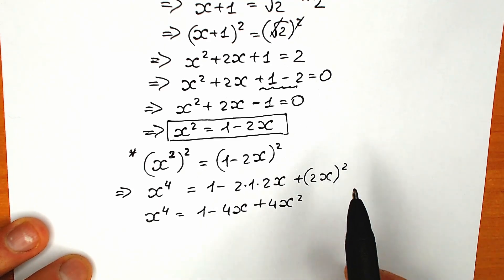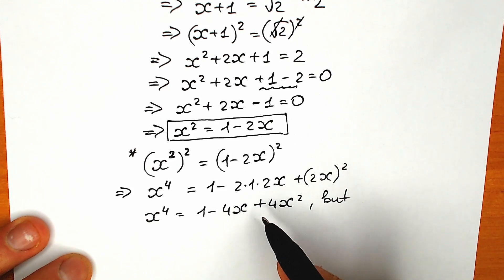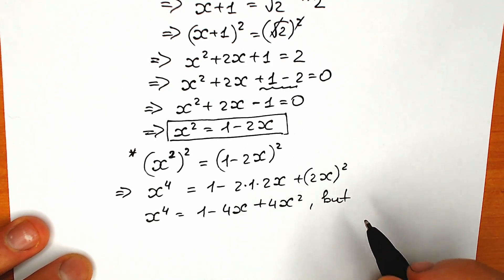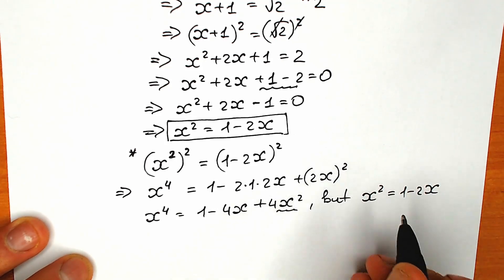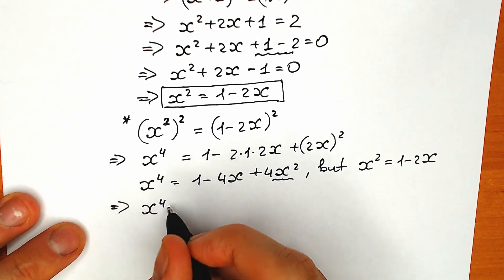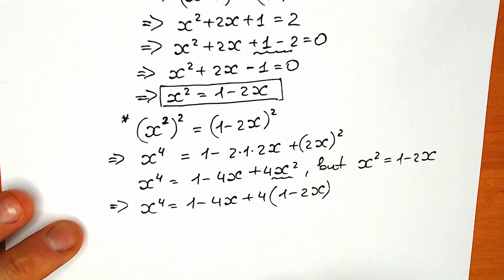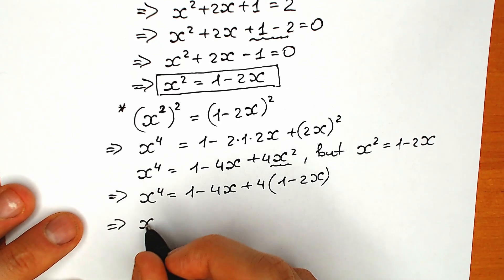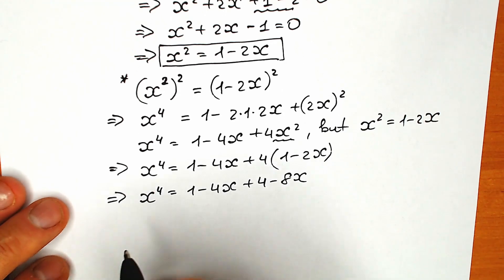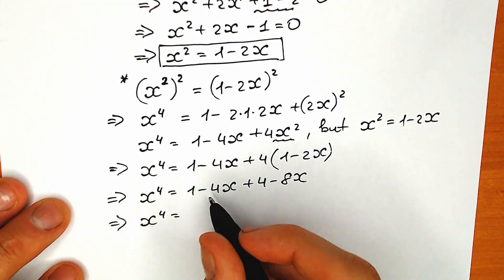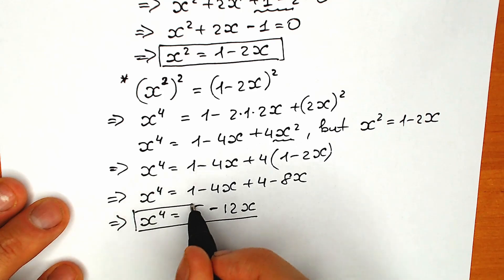A really tricky moment — a lot of students forget about this. Right here, x squared equals 1 minus 2x, so we can simplify this expression. Instead of x squared, let's plug in 1 minus 2x. So x to the power 4 equals 1 minus 4x plus 4 times (1 minus 2x). Simplifying: x to the fourth power equals 1 minus 4x plus 4 minus 8x, which gives us 5 minus 12x. So x to the fourth power equals 5 minus 12x.